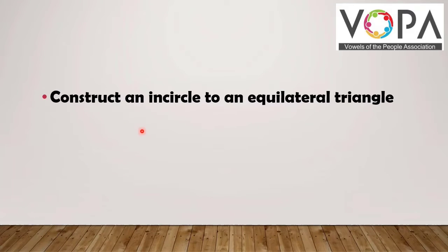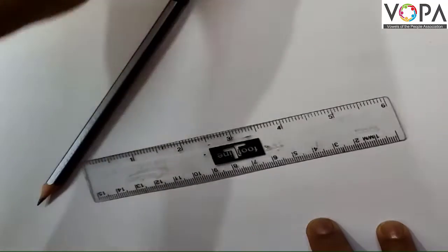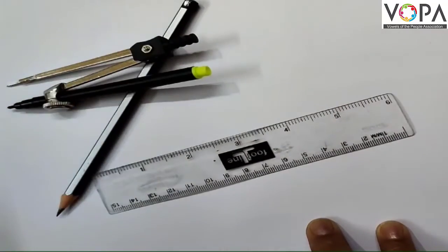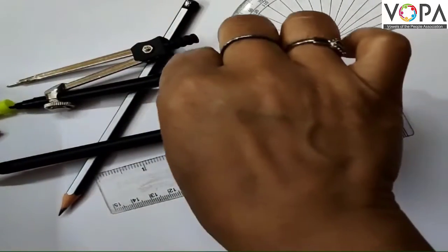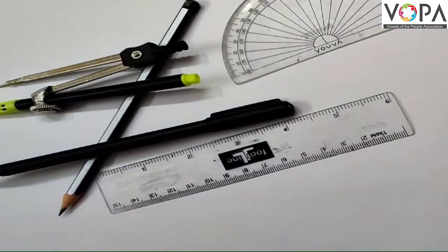Construct an in-circle to an equilateral triangle. Now let us see how this construction is done. To draw an in-circle we need a scale, pencil, compass, pen, protractor, eraser, etc.